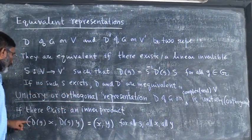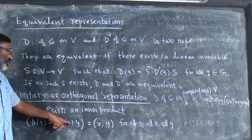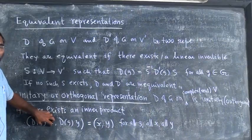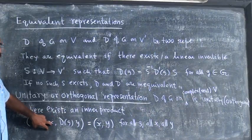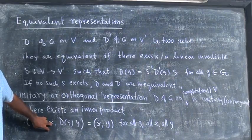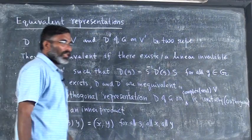If vector space is complex and such an inner product exists we call that as a unitary representation and this particular inner product is called a hermitian inner product if vector space is complex or a symmetric inner product if vector space is real.